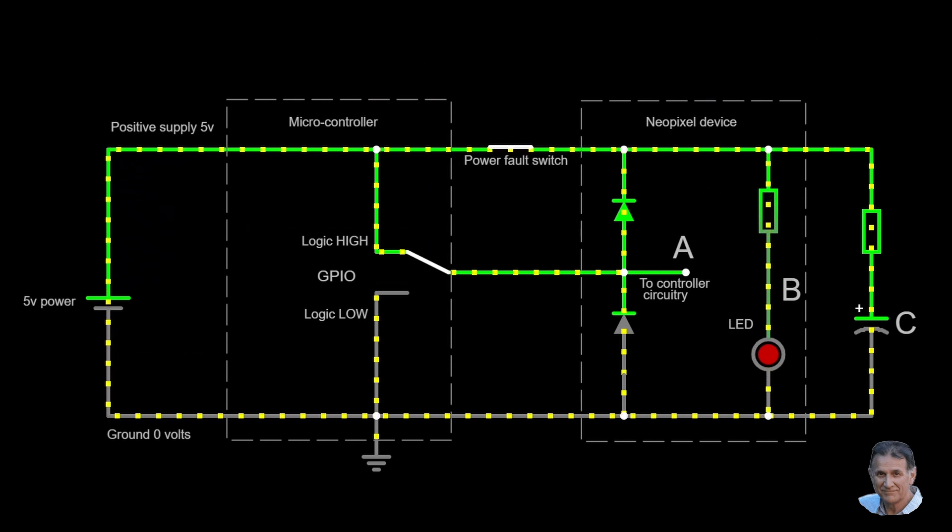To control the colour and brightness of the NeoPixel, the microcontroller toggles the GPIO pin rapidly between a logic high and a logic low. And this arrives at point A in the NeoPixel.